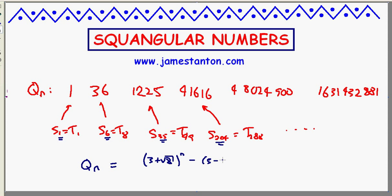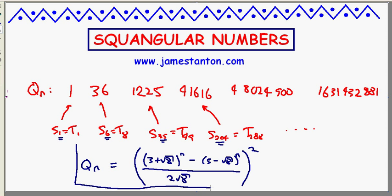Here it is: Euler discovered that the nth squangular number is given by [(3 + √8)^n - (3 - √8)^n] all over 2√8. That's the subscript of the square part, so the nth squangular number is that number squared.